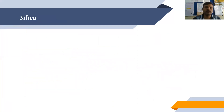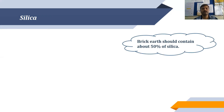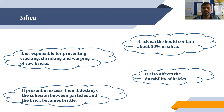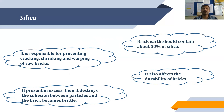Now let's look at the different constituents which must be present in a brick for good quality. The first is silica. Brick earth should contain about 50% silica. It is responsible for preventing cracking, shrinkage, and warping of raw bricks. It also affects the durability of bricks. If present in excess — more than 50% — it destroys the cohesion between particles and the brick becomes brittle. Silica provides durability and contributes to the strength of bricks.